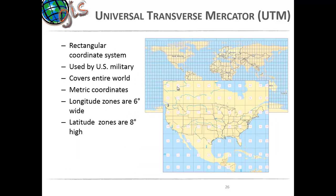Universal Transverse Mercator (UTM) is also one of the more popular projected coordinate systems. It is a rectangular coordinate system used by the military that covers the entire world and uses metric coordinates. Longitude zones are six degrees apart and latitudes are eight degrees high.